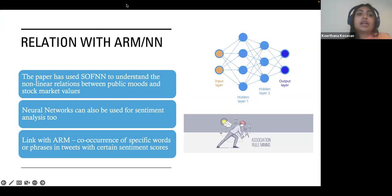Now let's look at how this paper is related to neural networks and association rule mining. This paper uses neural networks to understand how non-linearity occurs in this process and understand the relationship between public mood and how these public modes drive the prediction of the stock market. ARM is used to identify the co-occurrence of specific words or phrases in these tweets based on certain sentiment scores. This helps identify better trends and improve the accuracy of the predicted model.